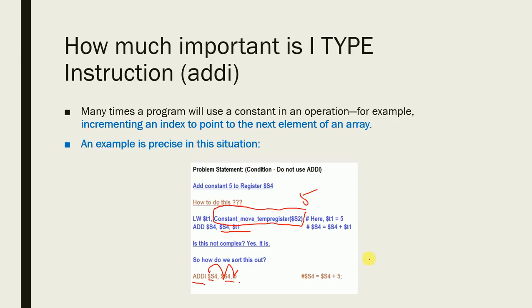To summarize: the first design rule says simplicity favors regularity; the second design rule says make it smaller. We've also covered I-type and R-type instructions with examples. In the next session, I'll talk about the remaining two design rules, which will also be very interesting. Thank you for following the channel — stay tuned for more updates.